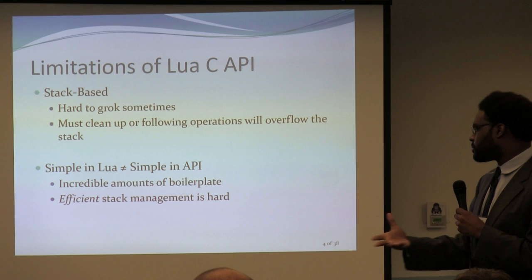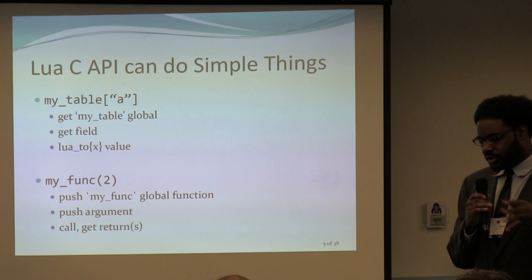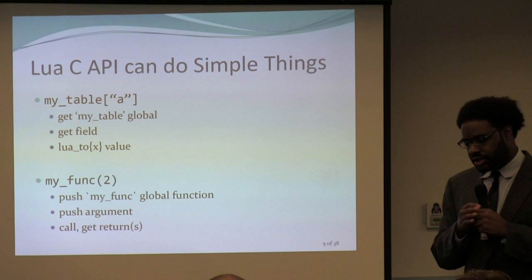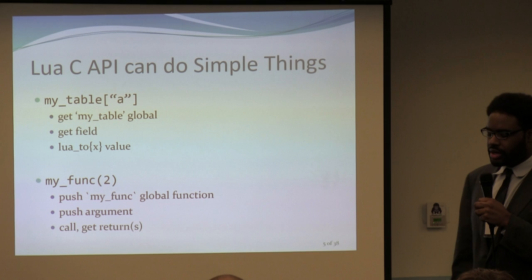There can be an incredible amount of boilerplate, and trying to efficiently manage the stack is difficult. But it's not that the Lua C API can't do simple things. For example, if you want to access something like 'my_table.value_tag', the steps in pseudocode are: get the 'my_table' global, get field A, then use lua_tovalue to get what you're looking for.